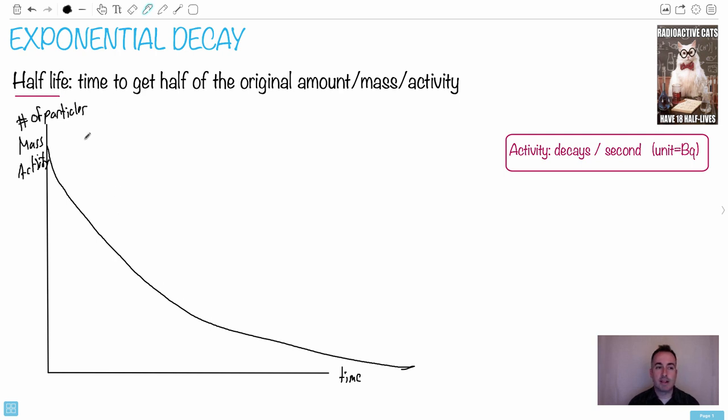So if you look at this, the idea is that you start off with a certain number of particles, or it could be a mass, like in grams or kilograms. It could be something called activity, which is just decays per second. So we use that unit called a becquerel. It could be activity. Either of these, it goes like this.